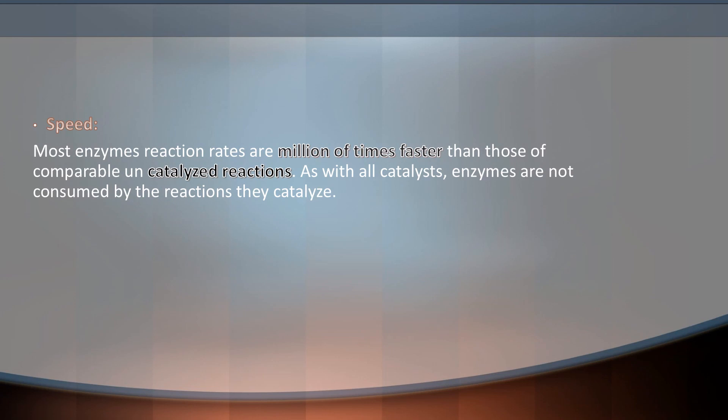Most enzyme reaction rates are millions of times faster than those of comparable uncatalyzed reactions. Enzymes are biocatalysts that make chemical reactions much faster. As with all catalysts, enzymes are not consumed by the reaction they catalyze. This is the speed characteristic of enzymes.